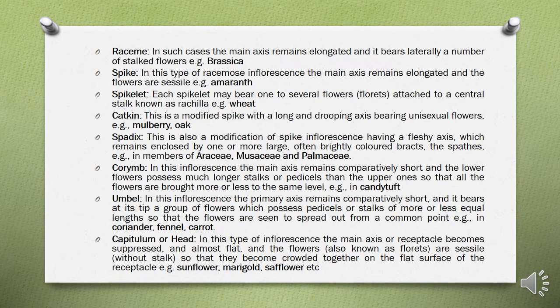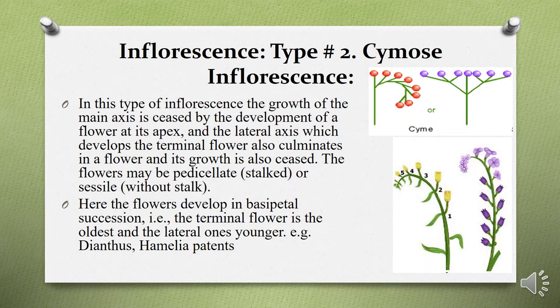This slide provides the detail of all types of inflorescence discussed, along with examples of each type. The second major type is cymose inflorescence. The difference from racemose is that in racemose, flowers are arranged in an acropetal manner, while in cymose, flowers are arranged in a basipetal manner — the terminal flower is the oldest while the lateral ones are younger.